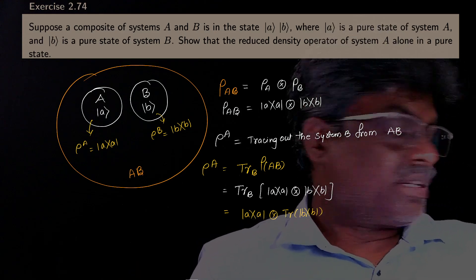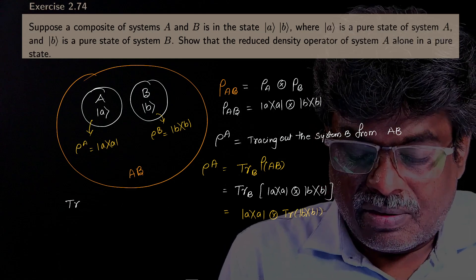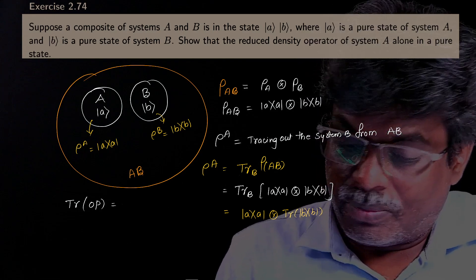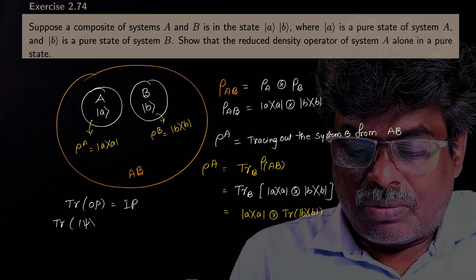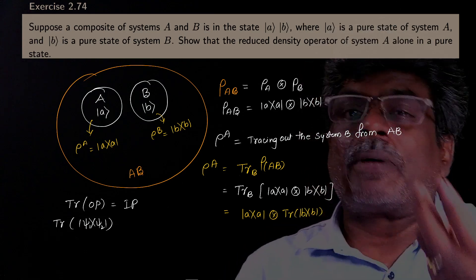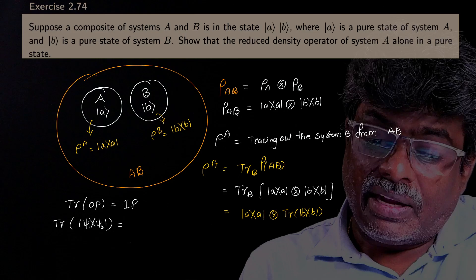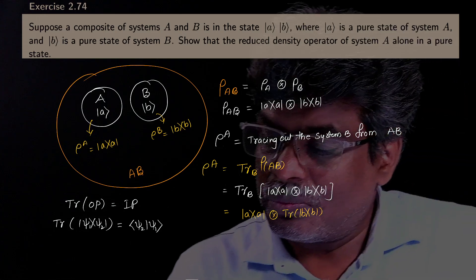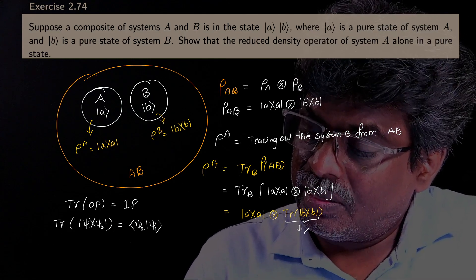What is the trace of the outer product? For example, the trace of the outer product |ψ₁⟩⟨ψ₂| — the outer product representation is an operator, it is a square matrix. If you find its trace, you always get the inner product ⟨ψ₂|ψ₁⟩. By using this, the trace of the outer product |B⟩⟨B| is nothing but the inner product ⟨B|B⟩.